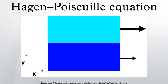In fluid dynamics, the Hagen-Poiseuille equation, also known as the Hagen-Poiseuille law, Poiseuille law, or Poiseuille equation, is a physical law that gives the pressure drop in a fluid flowing through a long cylindrical pipe.